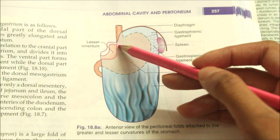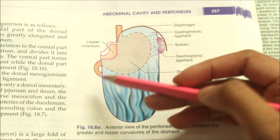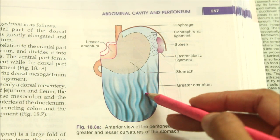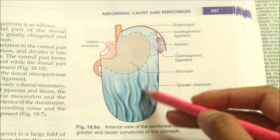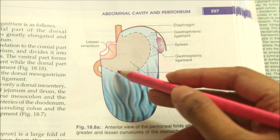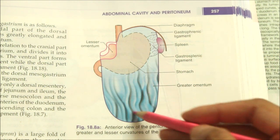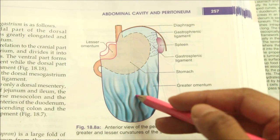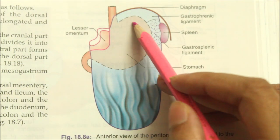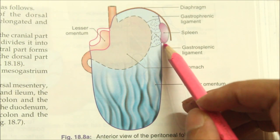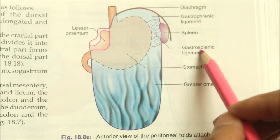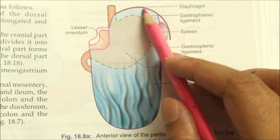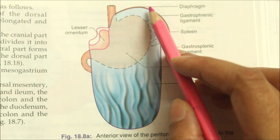Near the fundus of the stomach, the two layers meet to form the gastrosplenic ligament. Near the cardiac end, the peritoneum on the posterior surface is reflected onto the diaphragm as the gastrophrenic ligament.